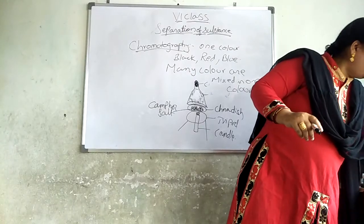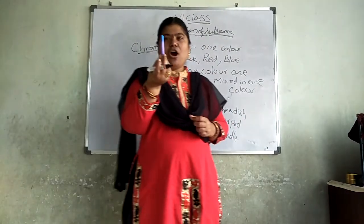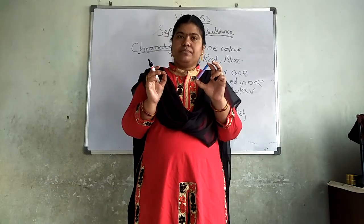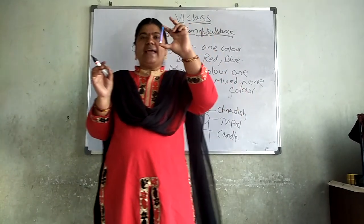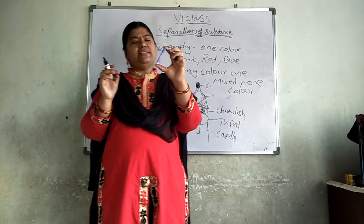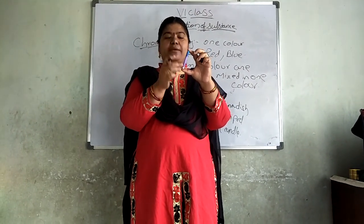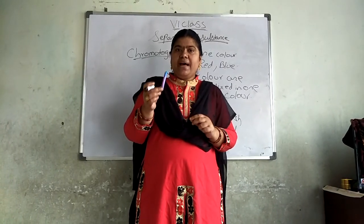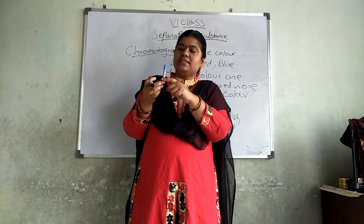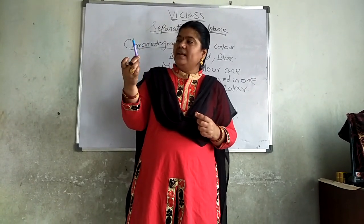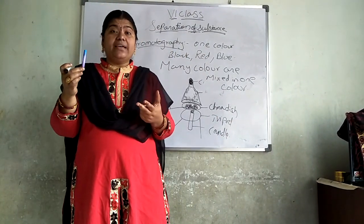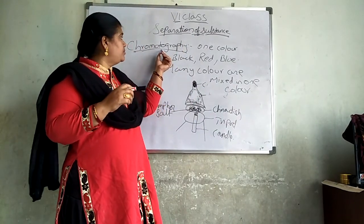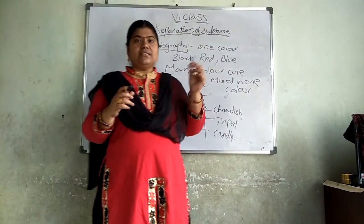For doing this chromatography, in my hand you can see chalks of different colors. On this chalk, I apply only blue color. Now you can see purple, thick blue, and light blue appear. When I showed you the ink bottle, you said only blue was present. But when I put blue color on the chalk, you can see it is a mixture of three colors. So you can try with black ink, red ink, or blue ink. Chromatography means the separation of a mixture of different colors.